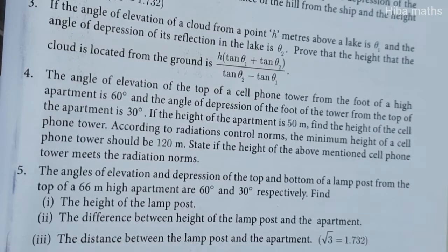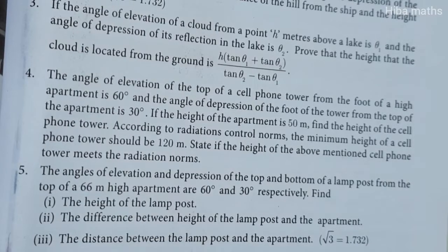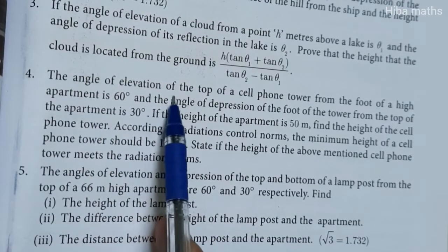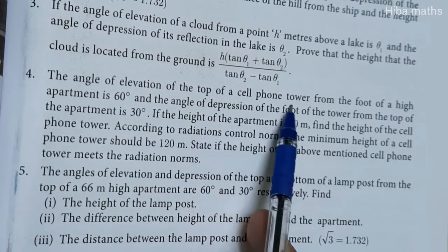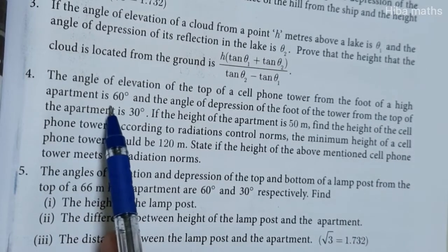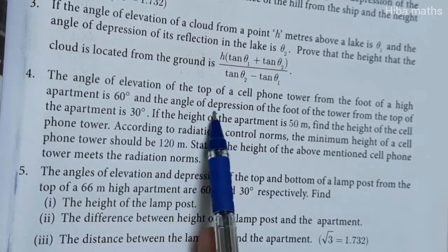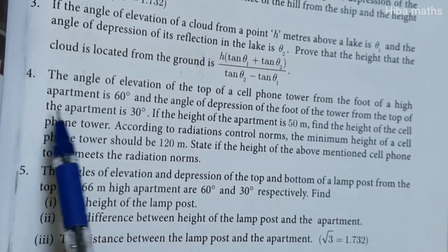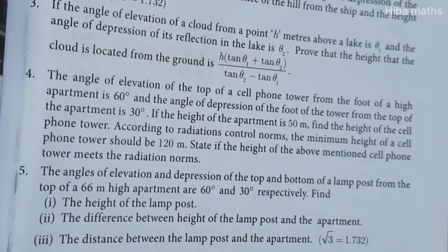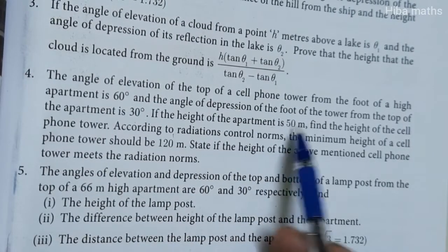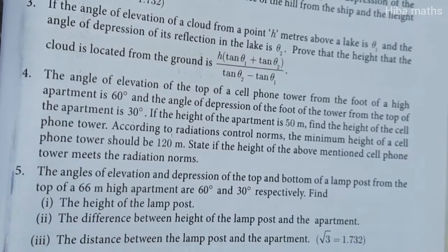Hello students, welcome to Hibamax 10th Standard Max XI, 6.4 4th question. This question is very important. The angle of elevation of the top of a cell phone tower from the foot of a high apartment is 60 degrees, and the angle of depression of the foot of the tower from the top of the apartment is 30 degrees. If the height of the apartment is 50 meters, find the height of the cell phone tower.